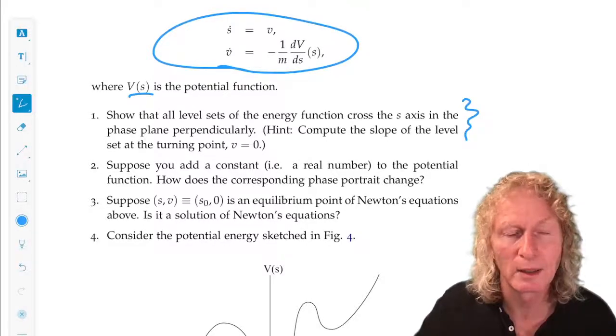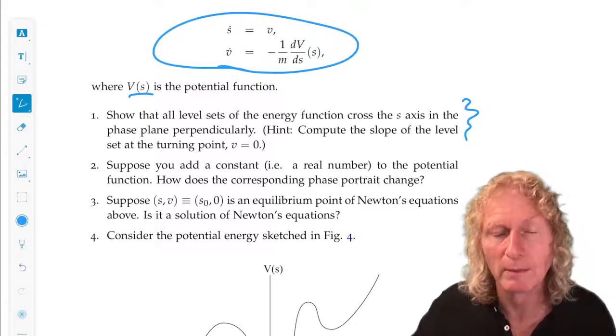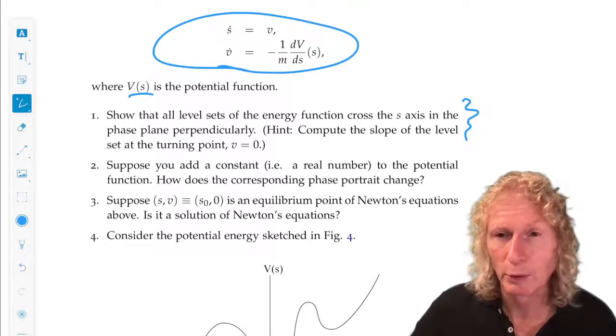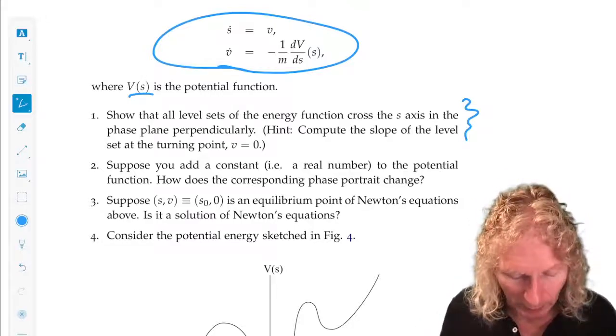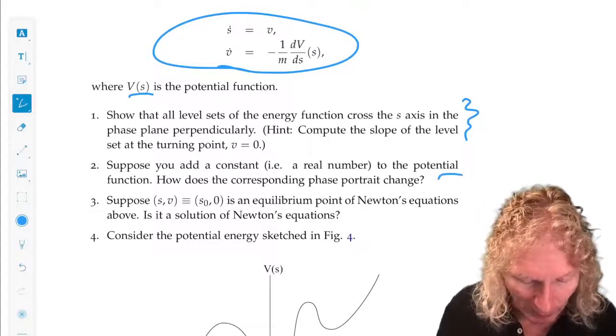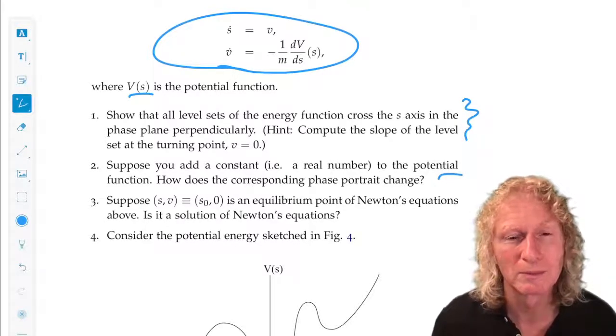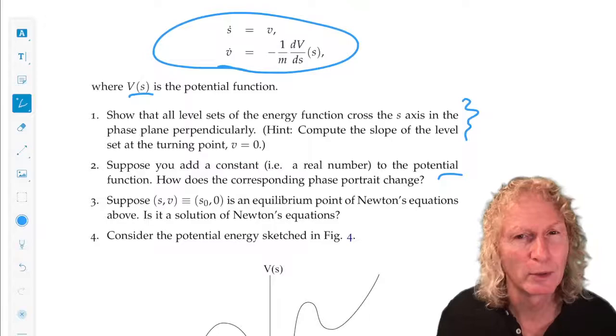So we know we have a condition when E equals V. When they cross you just need to compute appropriate derivative to check that. All right, if you add a constant to the potential function does it change the phase portrait. You need to think a little bit about this.